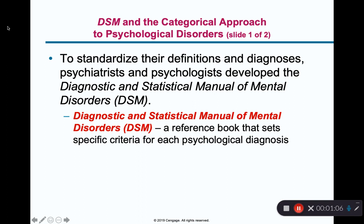Whenever we want to categorize disorders, the DSM-5 is where we go for our references. The DSM-5 breaks the disorders into categories. It has all the symptoms, the checklists, how many of these symptoms you have to have to actually have that disorder. So that's our reference book.